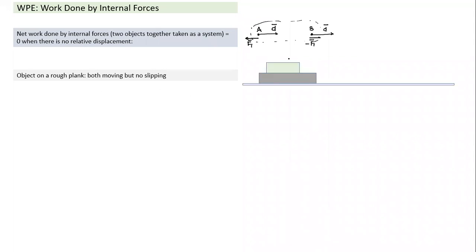Let's take an example. Even friction force can be an internal force. Consider two objects A and B on a smooth surface, with coefficient of friction between them μ = 0.2. If B is given an acceleration of 1 m/s², then A also moves with 1 m/s². Let's say mass A is 2 kg and mass B is 4 kg.